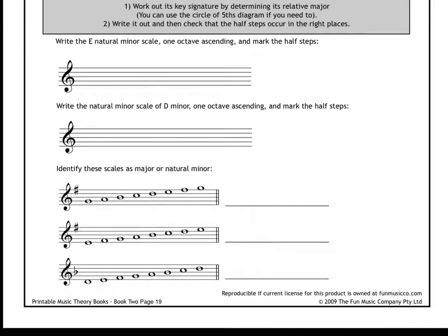All right, so essentially, when they ask you in the first question here, write the E natural minor scale, one octave ascending, and mark the half steps. What I'd like you to do first when you're doing this is flip back real quick to one of your drawings, to the previous page that has the circle of fifths that includes the minor keys, and find E natural minor. Find the key of E minor. All right, take about five seconds to do that. Just look at the previous page.